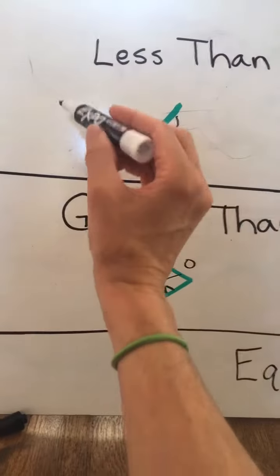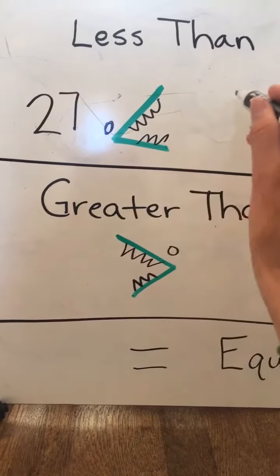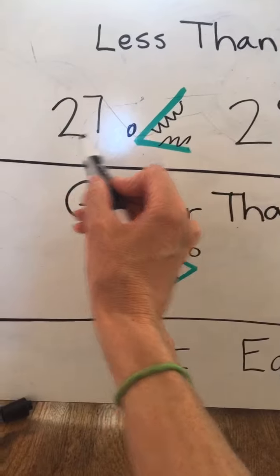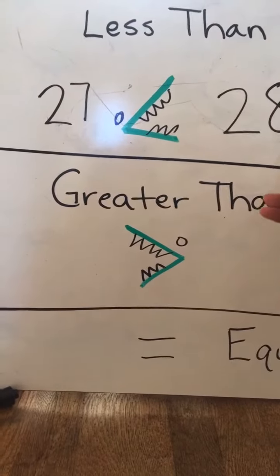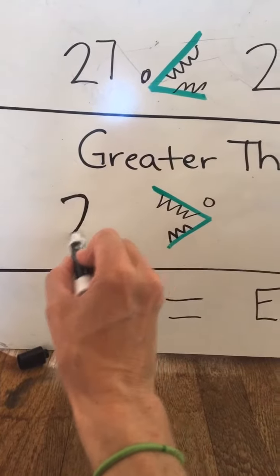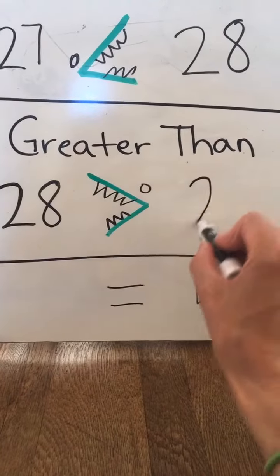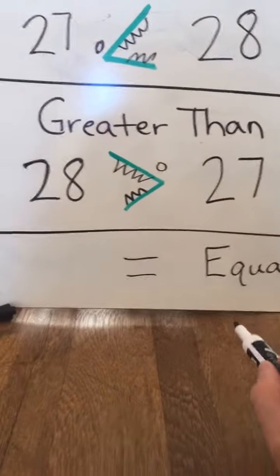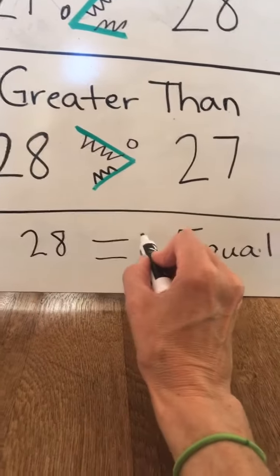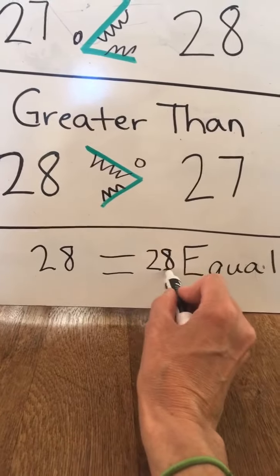For example, we could have 27 is less than 28, because in this case the tens are the same, so we have to go to the ones, and 8 is greater than 7. But for this one, we have to put the 28 first: 28 is greater than 27. Now down here we have our equal to symbol, so we would have 28 is equal to 28. They both have the same tens and they both have the same ones.